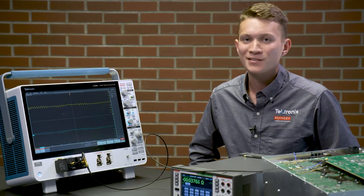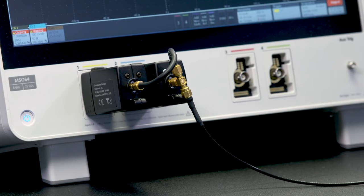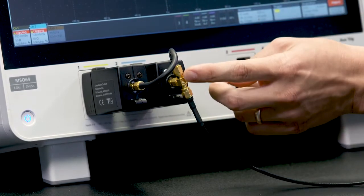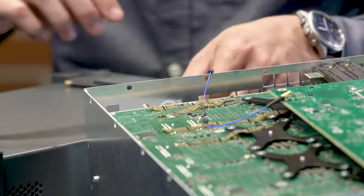The first step to making the measurement is to correct for any offset error between the channels. You do this by connecting both probes to the same test point. I accomplished this with the SMAT adapter and I'm going to connect these probes to the test point.